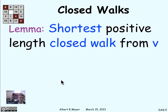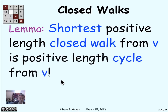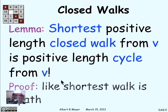We have a straightforward lemma about cycles and closed walks: the shortest positive length closed walk from a vertex to itself is a positive length cycle starting and ending at v. The reasoning is basically the same proof that said the shortest walk between two places is a path. If I have a closed walk from v to v and there was a repeat in it other than at v, I could clip out the piece of the walk between the repeat occurrences and get a shorter walk. So the shortest closed walk can't have any repeats — it's got to be a positive length cycle.